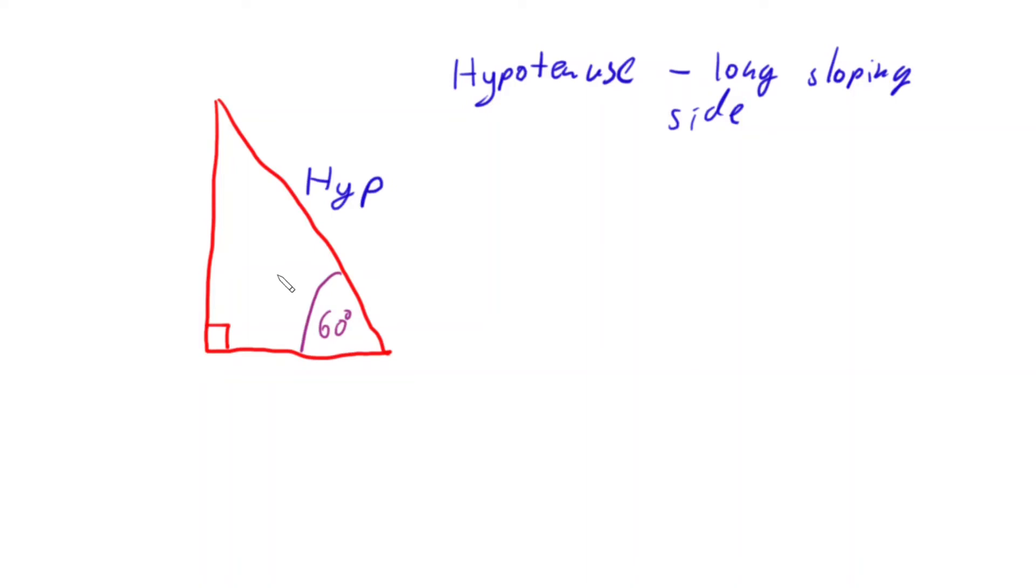And with trigonometry, some people label it HYP, short for hypotenuse, and some people just label it H. And that's the notation I'm going to use, H for hypotenuse. This is probably the most common.